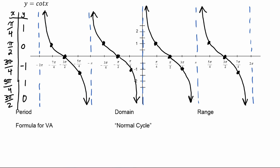Now we're ready to analyze this graph. We can find the period by subtracting an ending value minus the beginning value: pi minus zero tells us that the period is equal to pi.